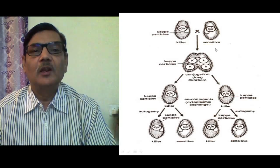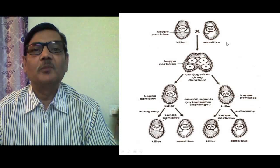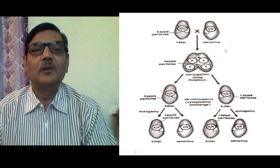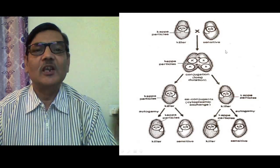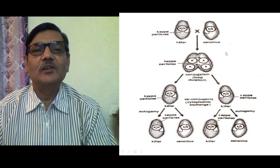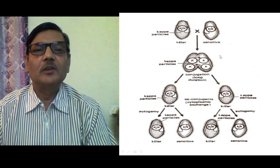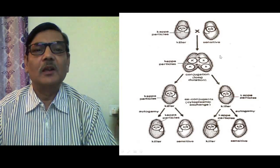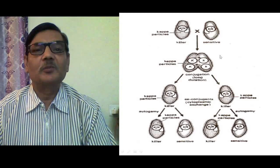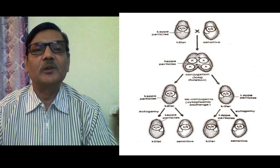This is the way the inheritance pattern of kappa particles takes place in Paramecium, and this is one of the most favored and popular examples to explain cytoplasmic inheritance.